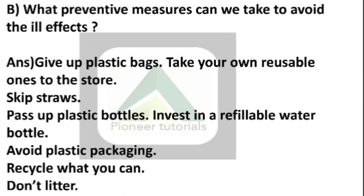Question 10B: What preventive measures can we take to avoid the ill effects of plastic pollution? Give up plastic bags and take your own reusable one to the store. Use reusable bags or cloth bags instead. Skip straws. Use refillable water bottles. Avoid plastic packaging. Recycle what you can. Don't litter — plastic bags that we use should be properly recycled.